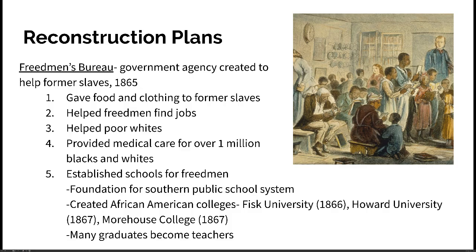The Freedmen's Bureau also created African-American colleges — some of our historically black colleges. Fisk University was created in 1866, and in 1867 we get Howard University and Morehouse College. Many graduates from those schools became teachers themselves, teaching other free Blacks to read, write, and learn math, science, and history. Importantly, these schools were not just for elementary-age children — they included adults as well, because most former slaves had never had the opportunity to learn.